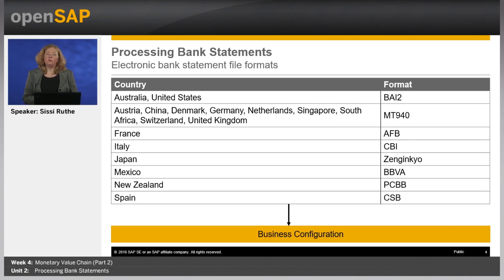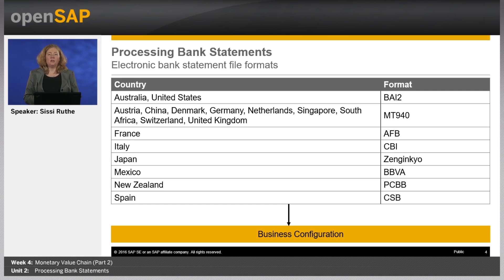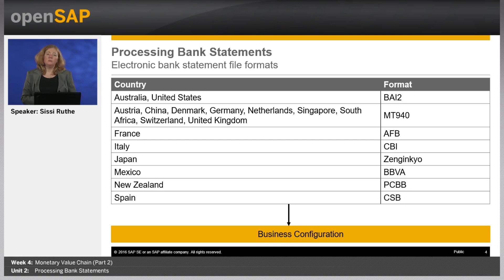To automate the process of posting incoming and outgoing payment items of a bank statement, you can use the electronic bank statement functionality. SAP Business by Design supports a number of pre-configured national and international file formats such as MT940 for several countries or BAI2 for the US and Australia, reducing implementation effort. It may happen that bank-specific characteristics need to be considered — in this case you adapt the pre-configured settings in the business configuration. It is important to contact your bank's technical support early in the implementation phase to verify the pre-configured file formats.